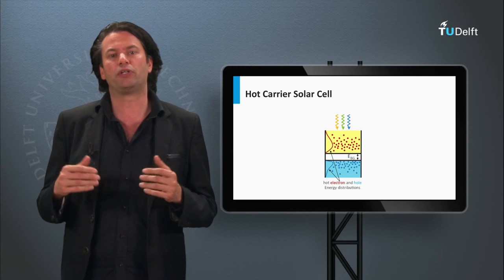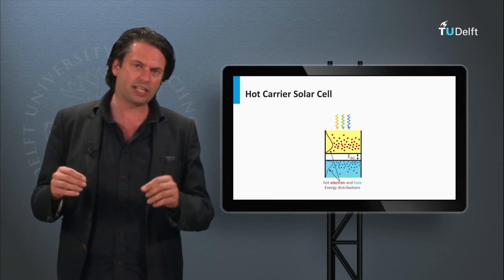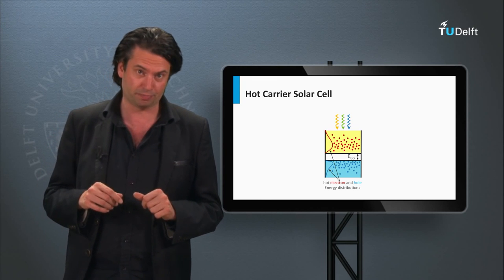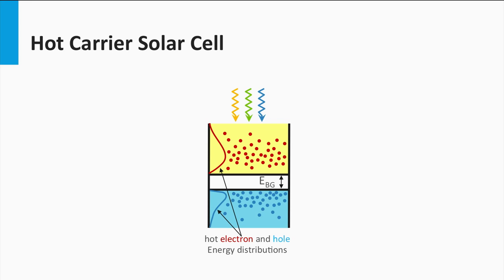The last concept we will discuss is the hot carrier solar cell, which basically improves the band gap energy utilization. Here we see the light-excited charge carriers in a semiconductor material. The population of the charge carrier levels reflects the situation just after the excitation by the absorption of a photon. This distribution is not in thermal equilibrium. The electrons are excited into a position higher in the conduction band, and the holes are excited down to a lower level in the valence band. Such charge carriers are called hot electrons and hot holes. It takes only a few picoseconds for the hot charge carriers to relax back to the edges of the electronic bands.